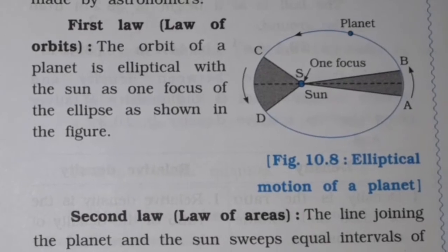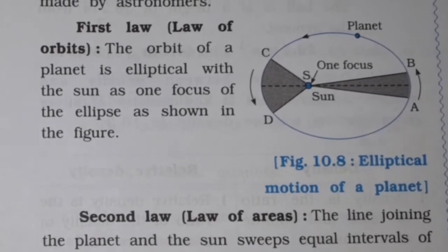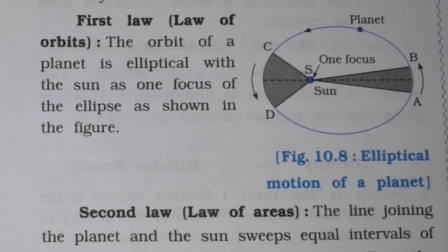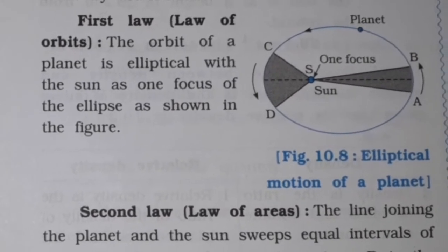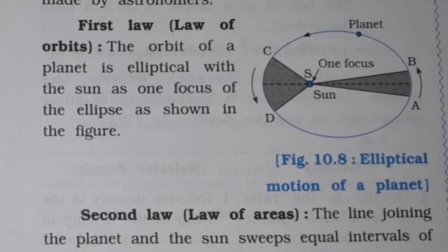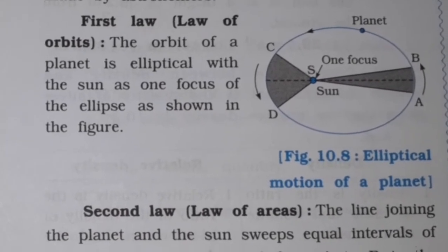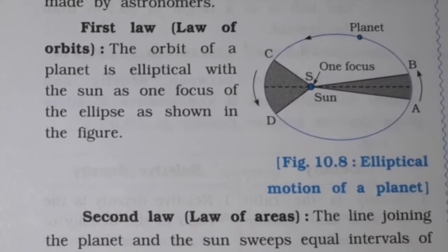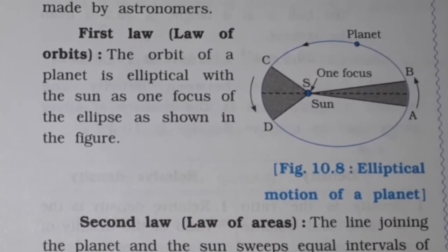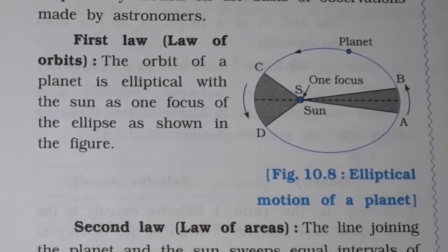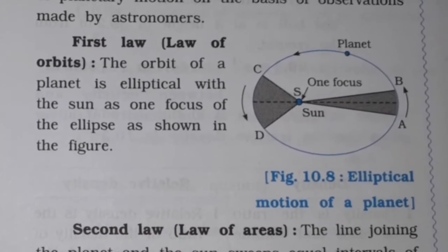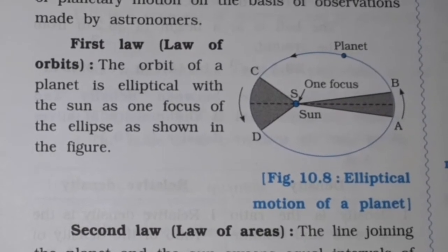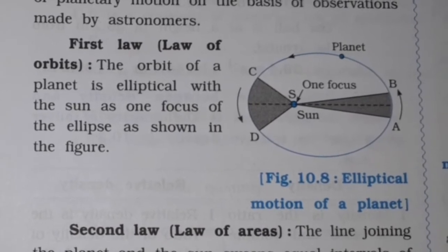Kepler's first law is the first law of planetary motion. The orbit of the planet is elliptical, with the sun at one focus of the ellipse, as shown in figure. We can see here that the orbit of the planet is elliptical and the sun is one of the foci of the ellipse as shown in the figure. This is Kepler's first law.